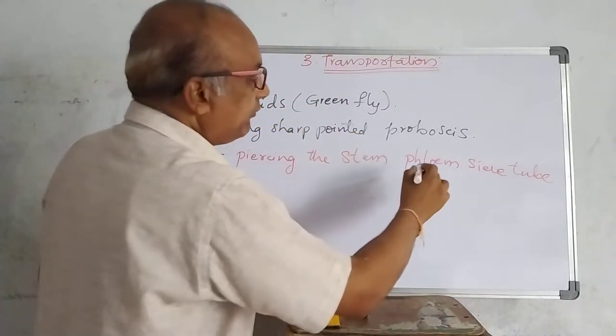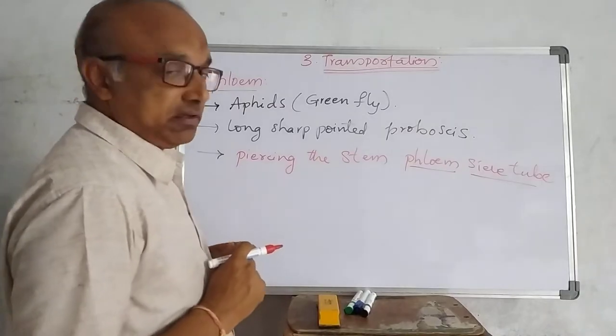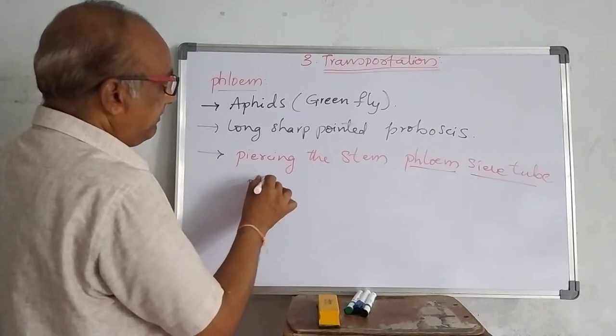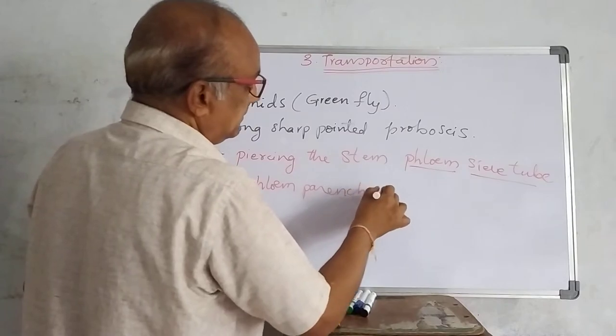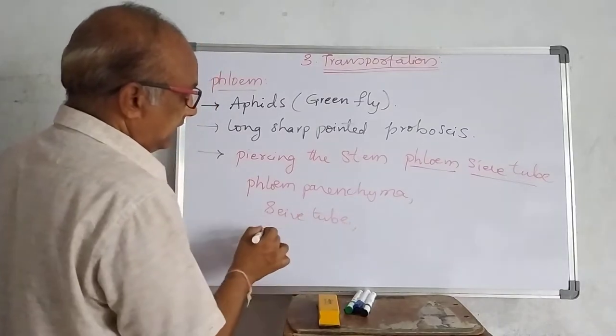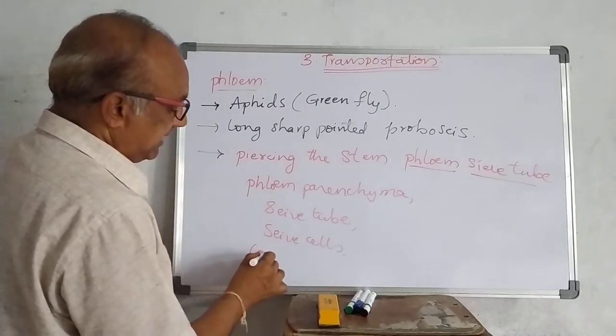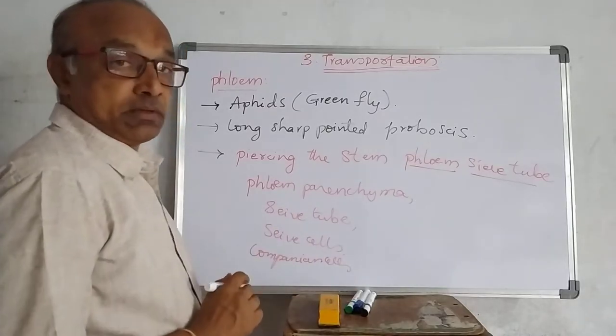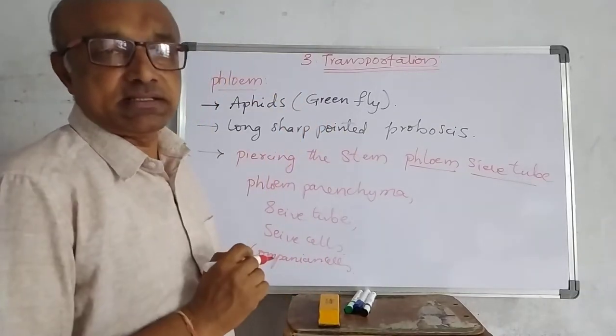Then what is phloem sieve tube? Actually, phloem is made of certain types of cells. In that phloem parenchyma, sieve tubes, sieve cells, companion cells, etc. So with these different types of cells, the phloem tissue is composed.